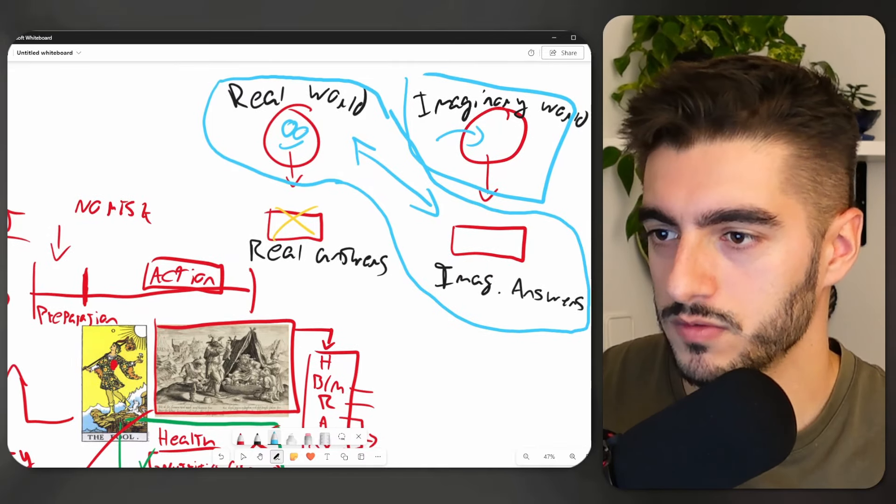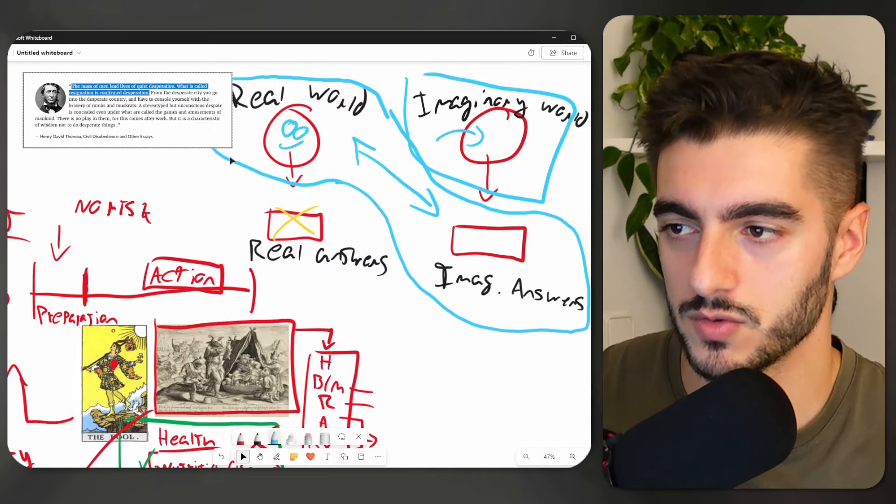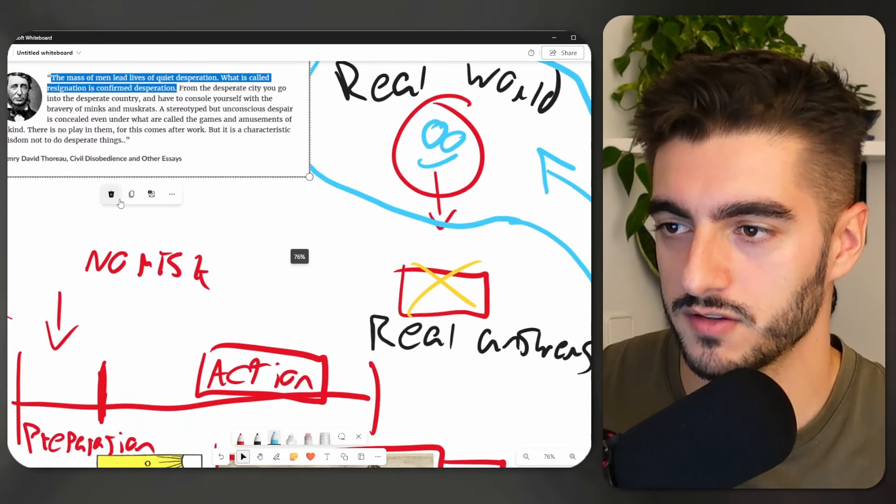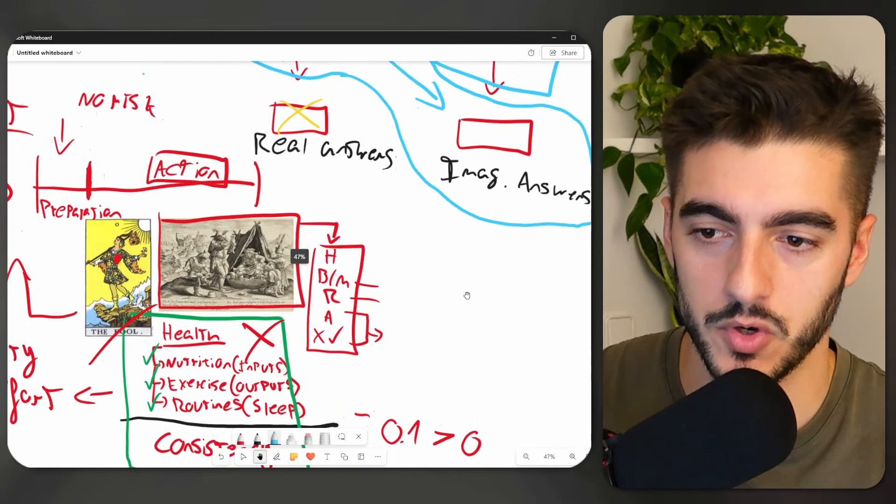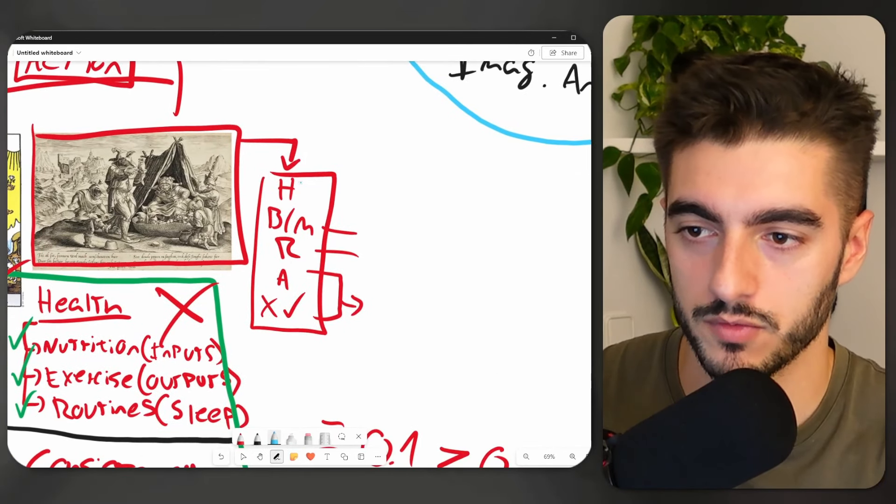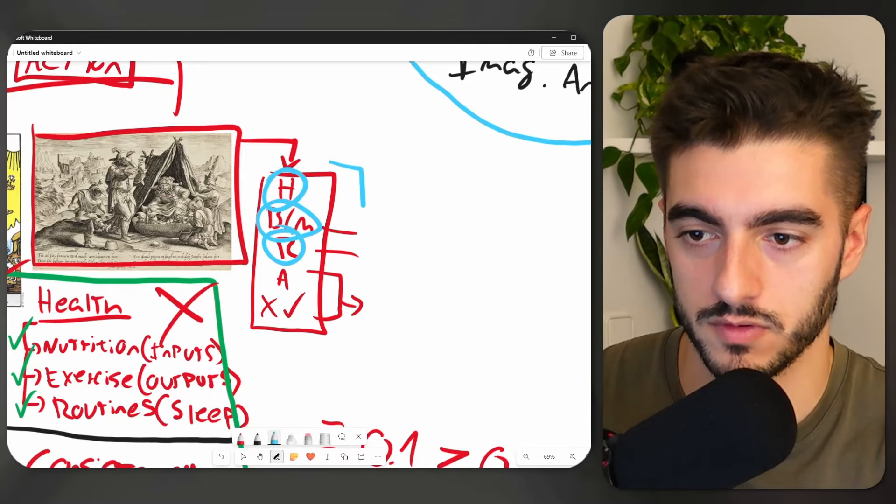And then what happens as the quote says from Henry David Thoreau, the mass of men lead lives of quiet desperation, what is called resignation is confirmed desperation. Now this neglection of the truth is not 100% conscious. And sometimes it can happen on multiple areas in your life. So for some people it might only be one, but for some other people it might be all across the board.